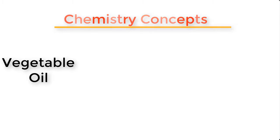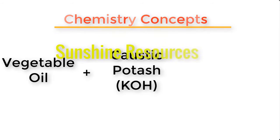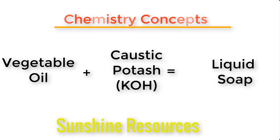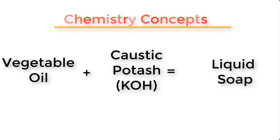But when you add vegetable oil to caustic potash — that is potassium hydroxide — you will get liquid soap. This is the basic characteristic behavior of caustic potash: the reaction between these two chemicals gives rise to liquid soap, whereas when you combine vegetable oil with caustic soda — sodium hydroxide — you get hard soap.